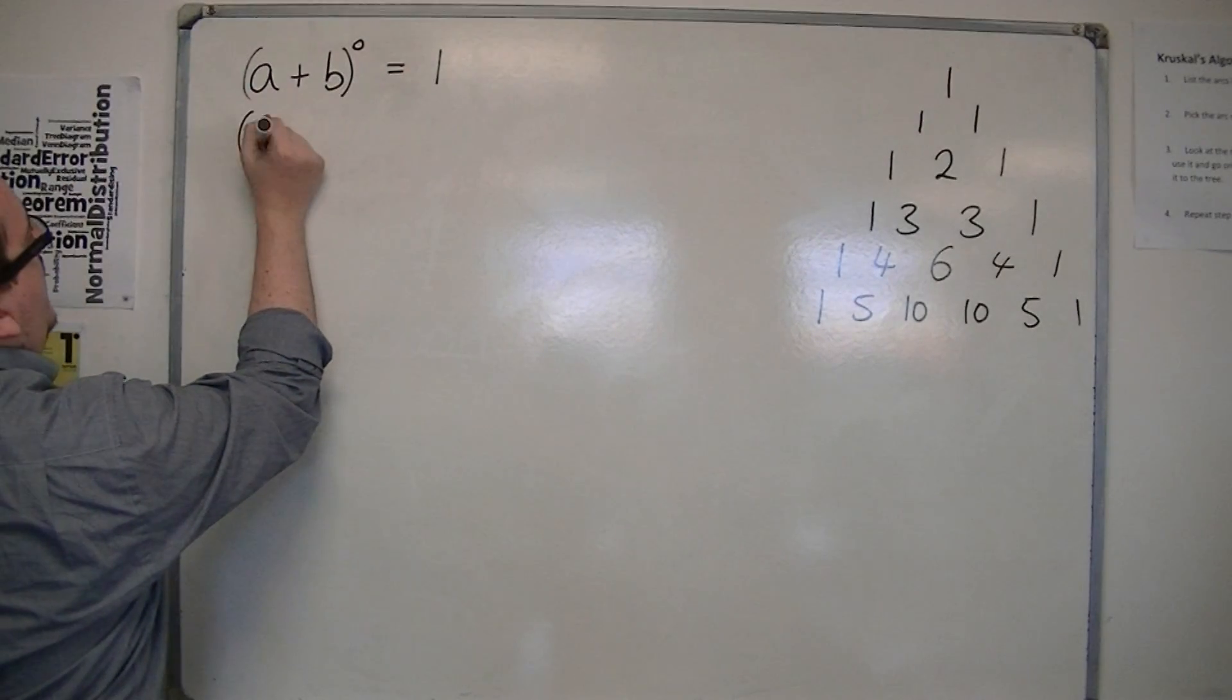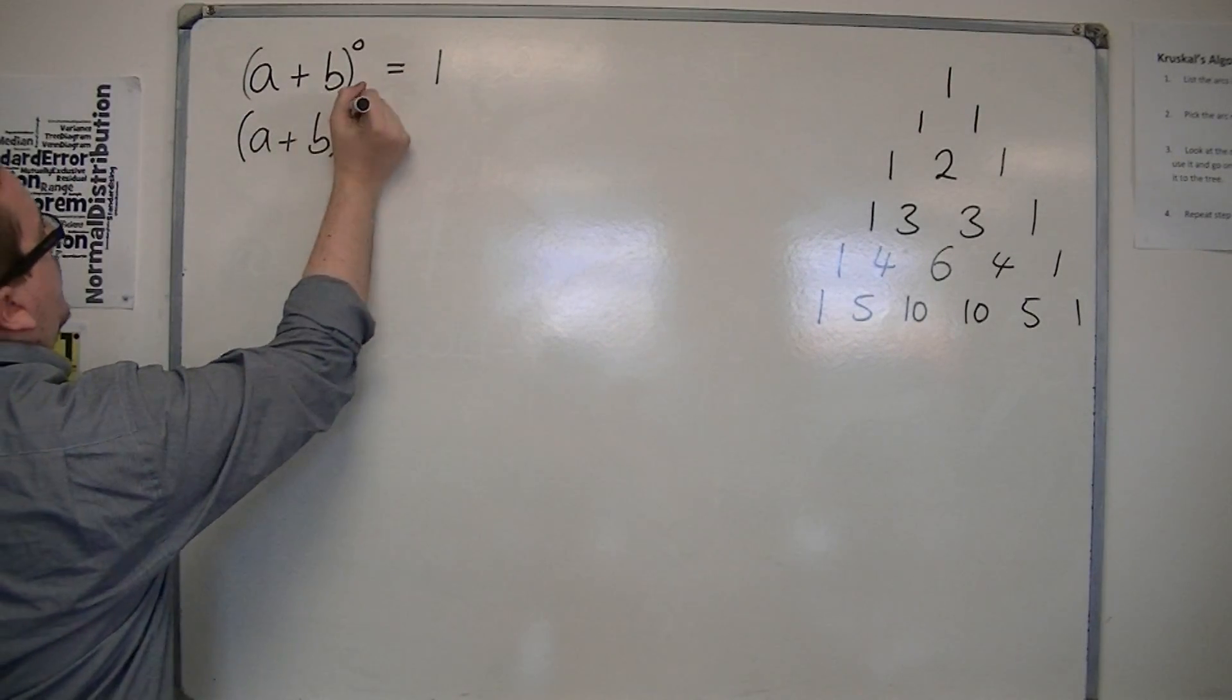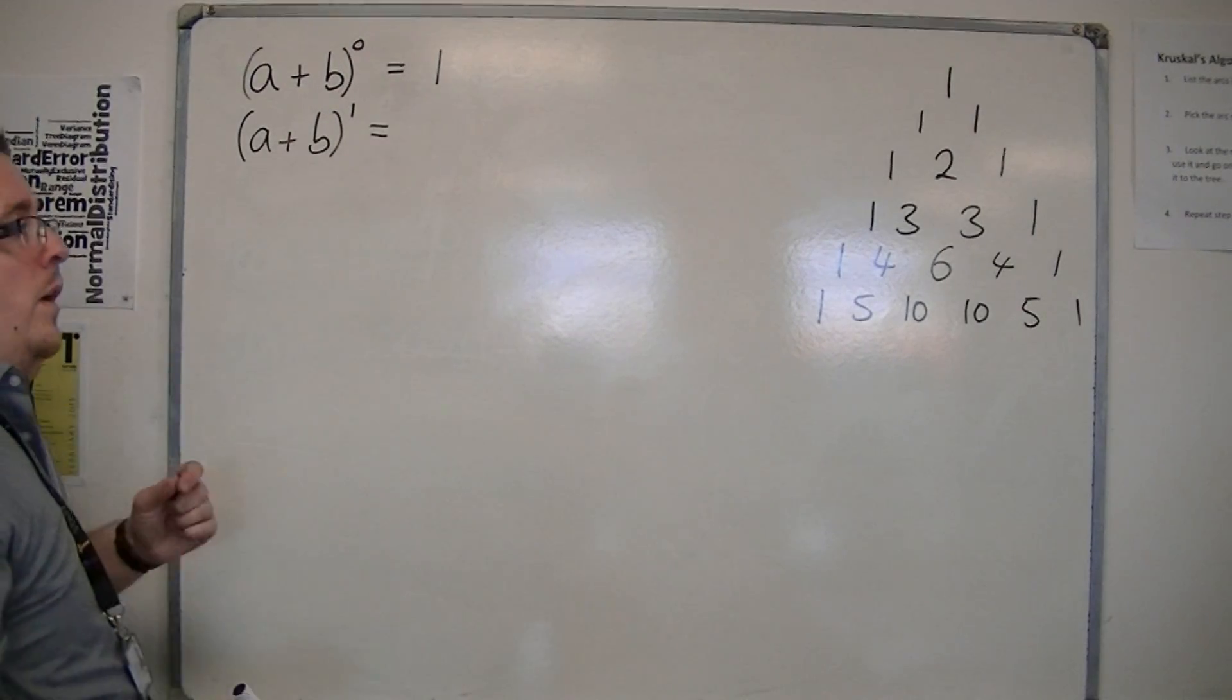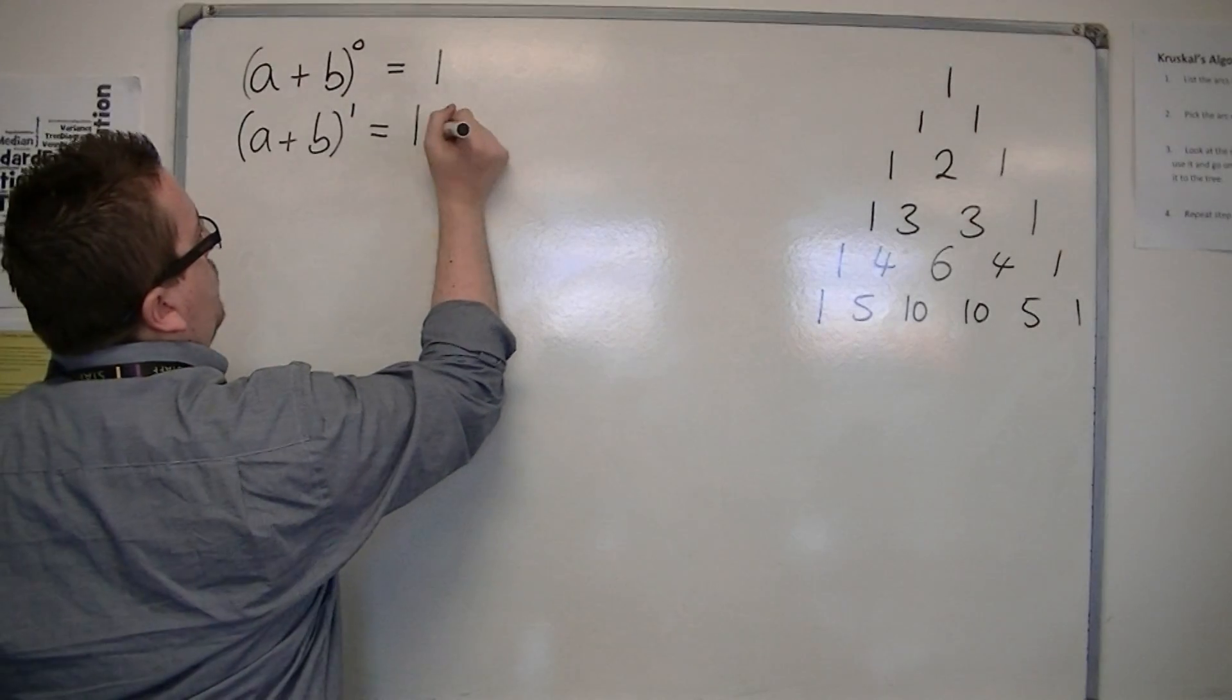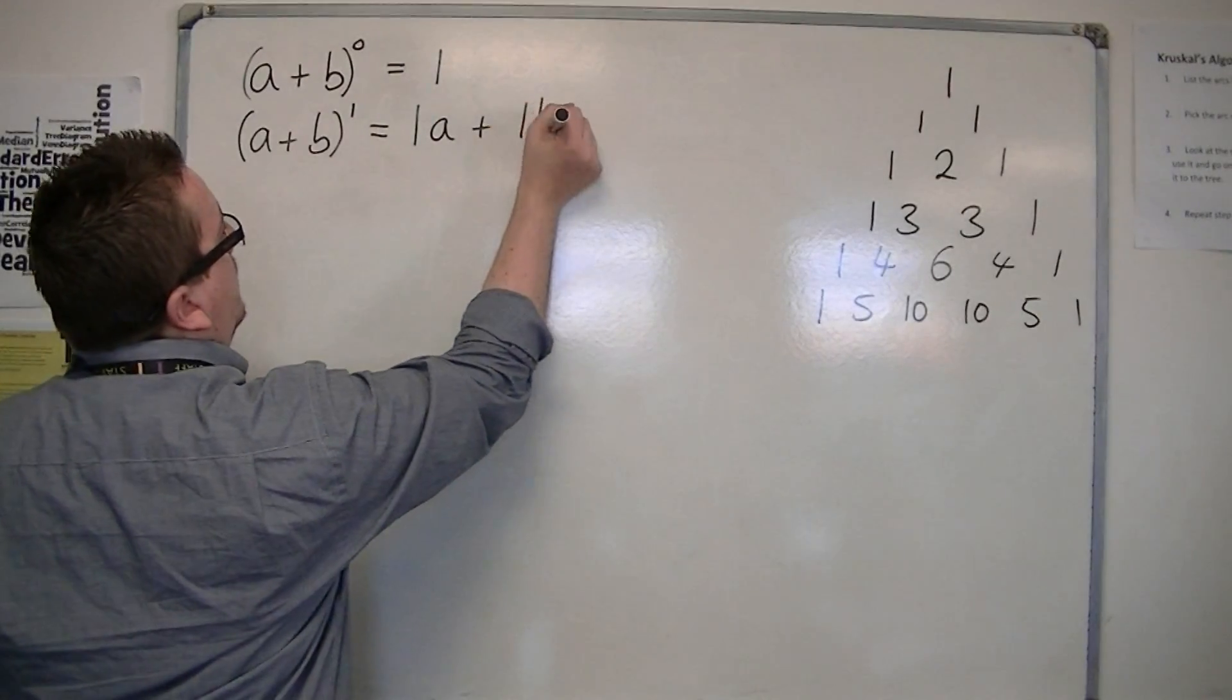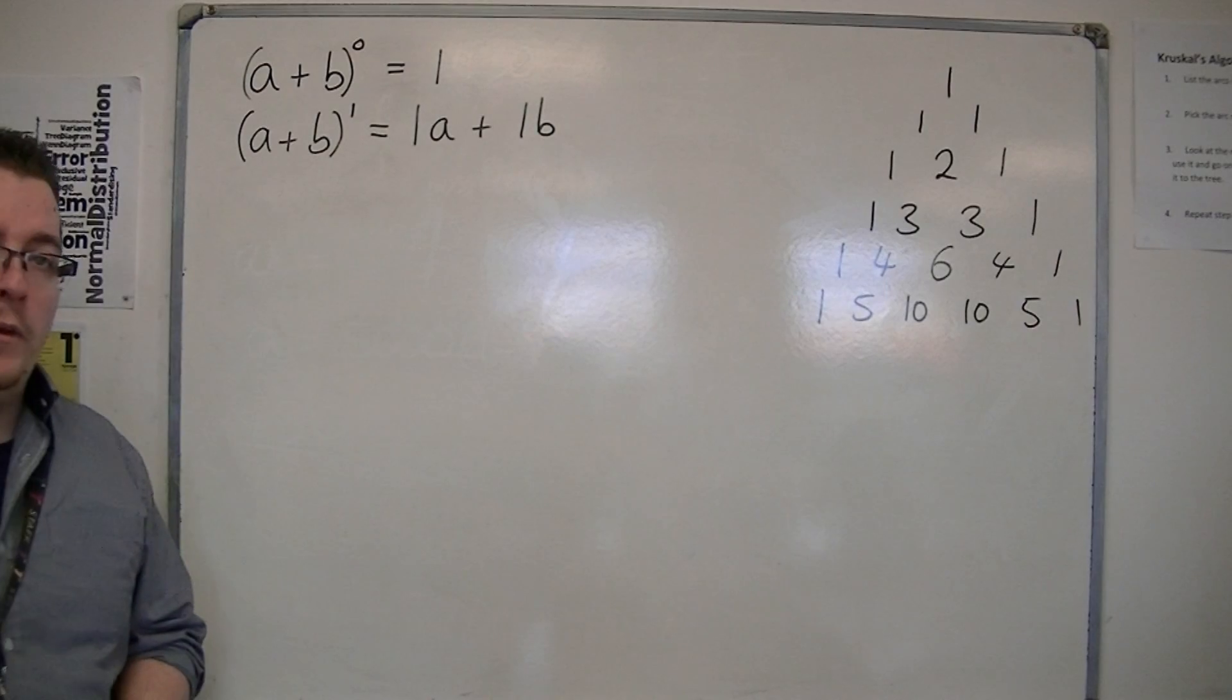Then we have (a+b)^1. Well, that's just going to be a+b. But I'm going to write it as 1a + 1b, just to highlight where this is going.